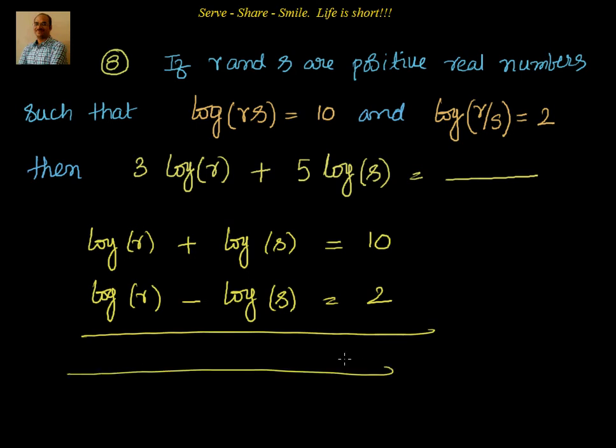Now, we need to find out 3 into log r plus 5 into log s. For that, we need the values of log r and log s. So we can do that. It's like a linear equation in two variables. You just add them up.